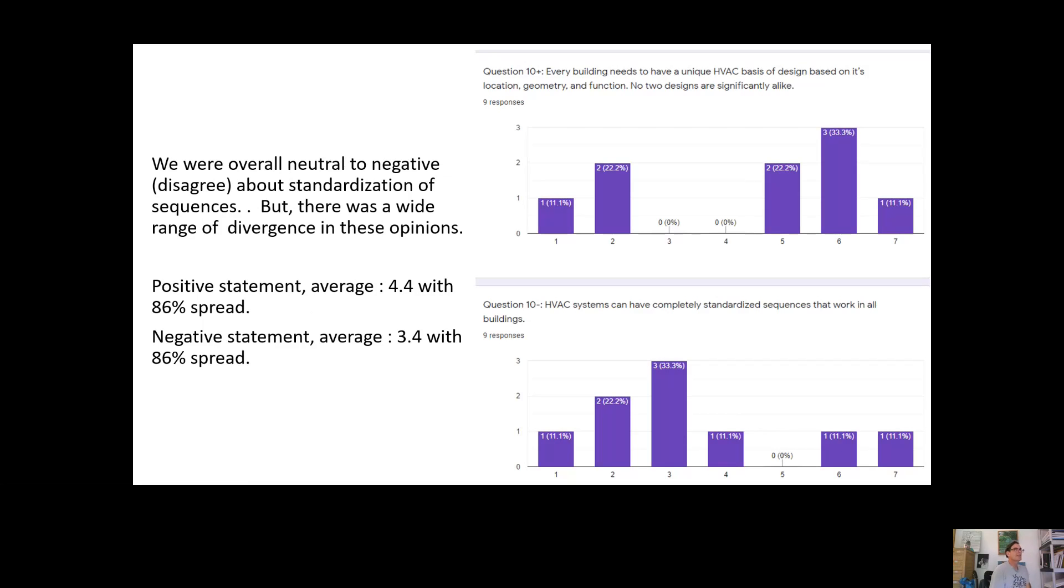And then finally, question number 10. Every building needs to have a unique HVAC design based on its location, geometry, and function. No two designs are significantly alike. And the negative version of this was that HVAC systems can have completely standardized sequences that work in all buildings. This was our broadest, I think this was our broadest disagreement. You can see it. The answers range from one to seven, and they're very broad upon this, which this to me is kind of a troubling response out of our group, because this basically says that efforts like guideline 36, standard sequences of operations, are for naught.